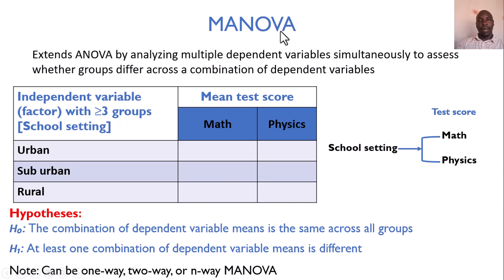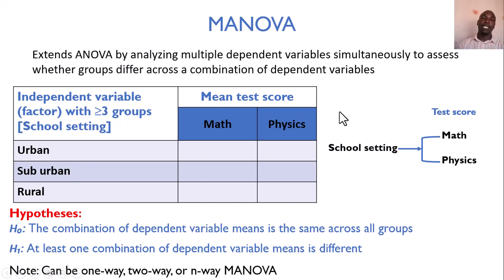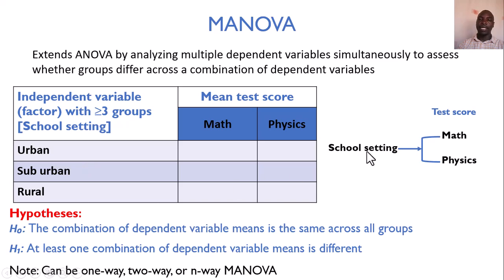A note on MANOVA: if we have only one independent variable, we call it a one-way MANOVA — as in this example with one independent categorical variable against two outcomes. We could also add gender alongside school setting, making it a two-way MANOVA.